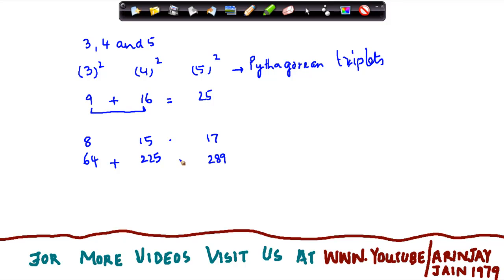Again, sum of these two is equal to the square of the third number. So these three numbers are known as Pythagorean triplets.